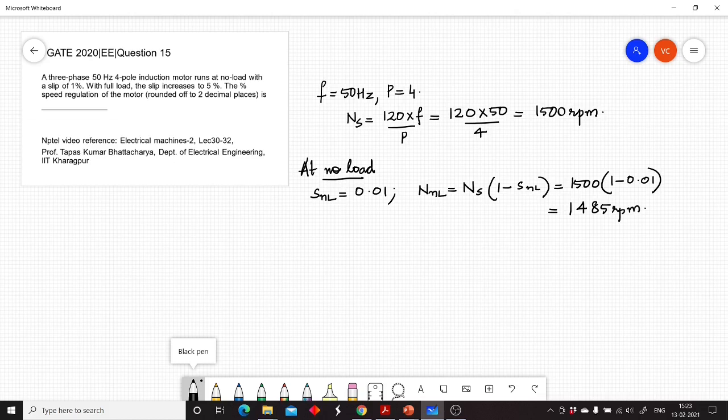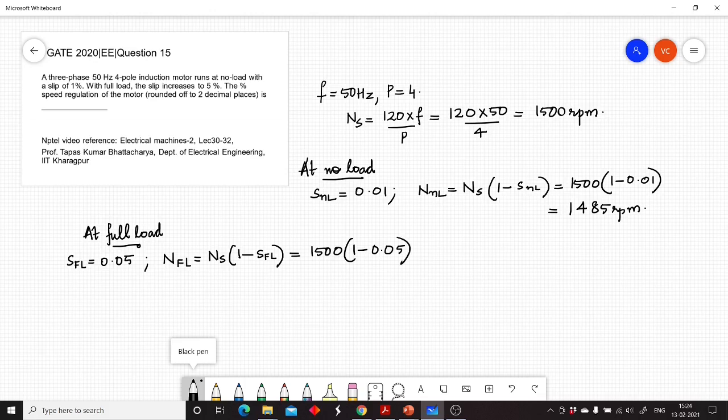Now the next condition is at full load. At full load, the slip is given to be 5 percent, so Sfl equal to 0.05. Correspondingly, the speed of the motor at full load, Nfl, equal to Ns into (1 minus Sfl), which is equal to 1500 into (1 minus 0.05). If you do the calculation, we will get the speed as 1425 rpm.